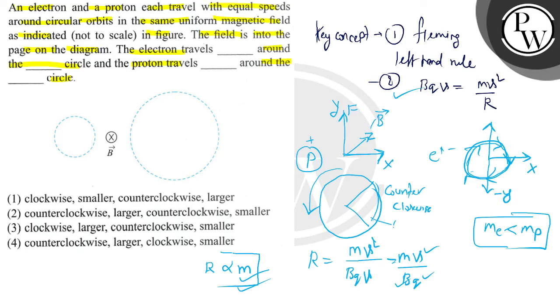This large circle is for proton and this small circle is for electron. Now look at the options. Option one says clockwise smaller and counter clockwise larger. According to the question the right answer is option one that is clockwise smaller and counter clockwise larger. I hope you have understood it well and best of luck.